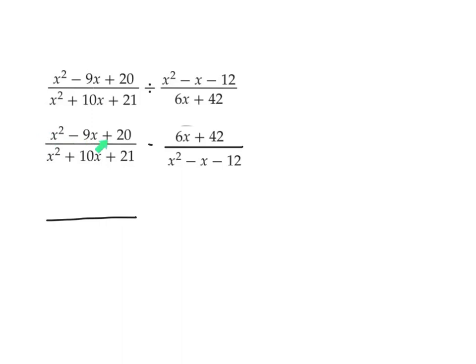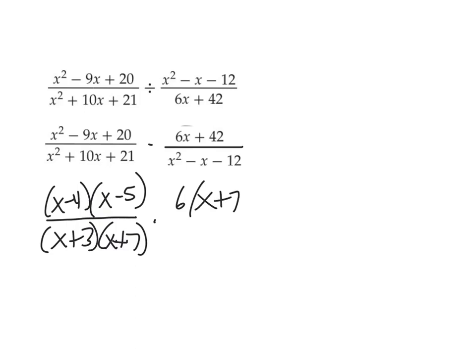Fortunately, this is leading 1. So, I've got factors of 20 that add up to negative 9. X minus 4. X minus 5. On the bottom, I'm looking for factors of 21 that add up to 10. So, X plus 3. X plus 7. Then, over on this one, I've got a greatest common factor. So, I'm going to take a 6 out. It's just going to be X plus 7. And, then on the bottom, I'm looking for factors of negative 12 that add up to negative 1. So, that's X minus 4. X plus 3. All completely factored. Now, we're good.